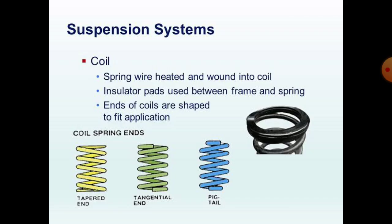In this suspension system, coil spring wire is heated and wound into a coil. Insulated pads are used between the frame and spring. The ends of the coils are shaped to fit the application. There are different types of coil spring ends used in suspension systems: tapered end, tangential end, and pigtail end.